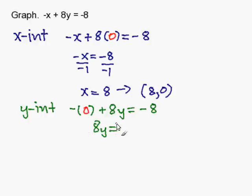I simplify my equation. That leaves me with eight y equals negative eight. And to get y by itself, I divide eight on both sides of the equal sign. And I get y equals negative one. Now my ordered pair for the y-intercept is zero comma negative one.